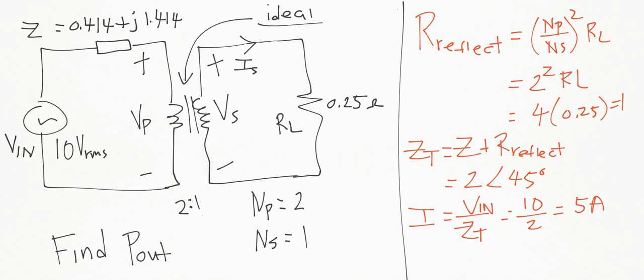So the source is drawing 5 amps and a power equal to I squared R reflect. When we do it all out, it's going to be 5 squared times the reflection resistance, which is equal to 1, which just means it's 5 squared. And here we get the same 25 watt answer as before.